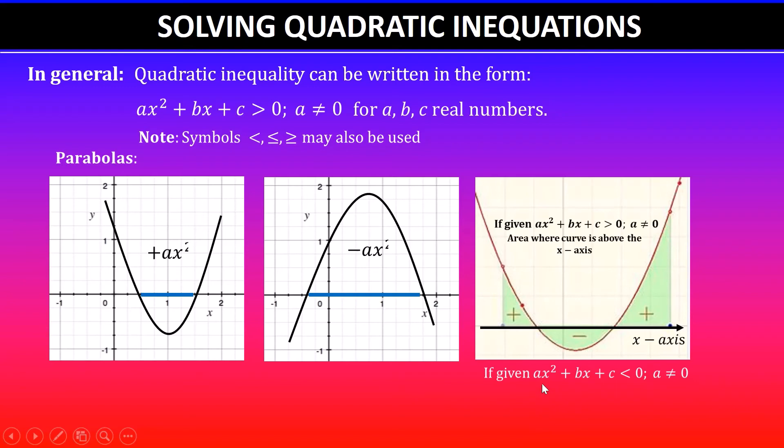Less than zero means it's below the x-axis, so you can clearly see that the section below the x-axis is negative and will be between the two values you have calculated.